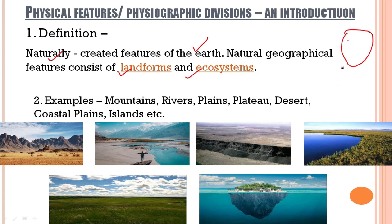Let us suppose that this is your face, and your face here is clearly resembling the earth. Now if I ask you: look at your face and tell me the features of your face, the characteristics of your face — what's going to be your answer? Of course you will speak about the different organs related to your face. So basically you will answer: eyes, nose, lips, ears, and hair.